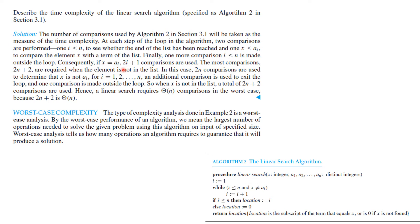Consequently, if x equals a_i, then 2i + 1 comparisons are used. The most comparisons happen — 2n + 2 — when x is not in the list. In that case, 2n comparisons are used to determine it's not in the list, one additional comparison is used to exit the loop, and one comparison is made outside the loop. So you get 2n + 2 comparisons. Hence, a linear search requires Θ(n) comparisons in the worst case.